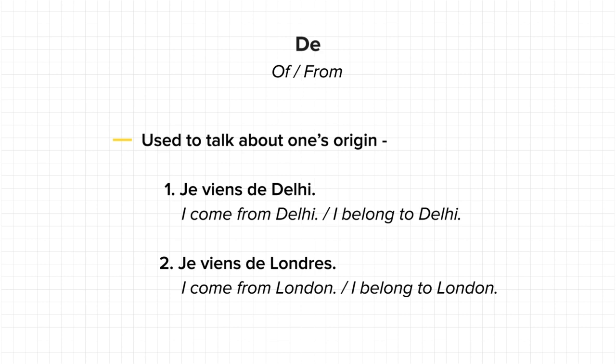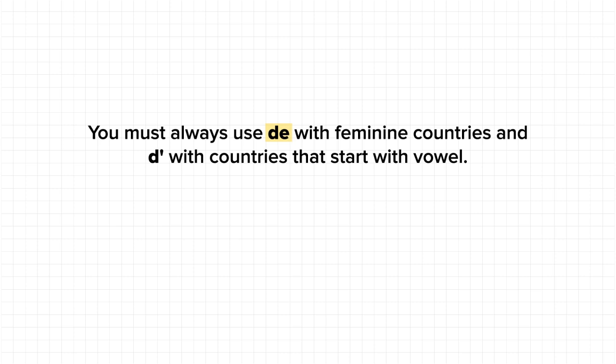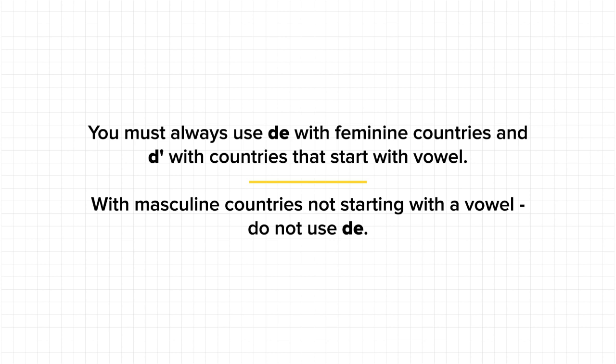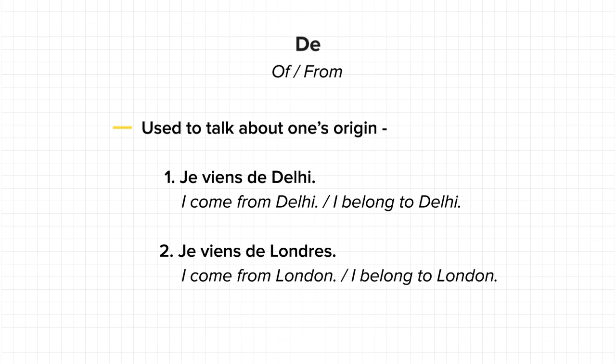'I come from London' or 'I belong to London'. Now, when it comes to countries, you must always use 'de' with feminine countries and 'de' apostrophe with countries that start with a vowel. But please note that when talking about masculine countries that are not starting with a vowel, you will not use 'de'. We'll get to this part very shortly. For now, you must know that with feminine countries and with countries that start with a vowel, you can always use 'de'.